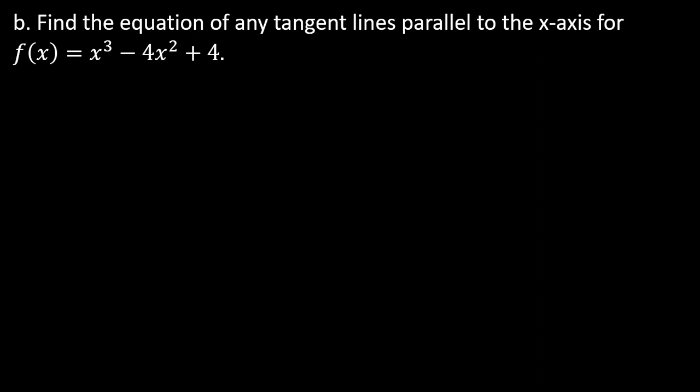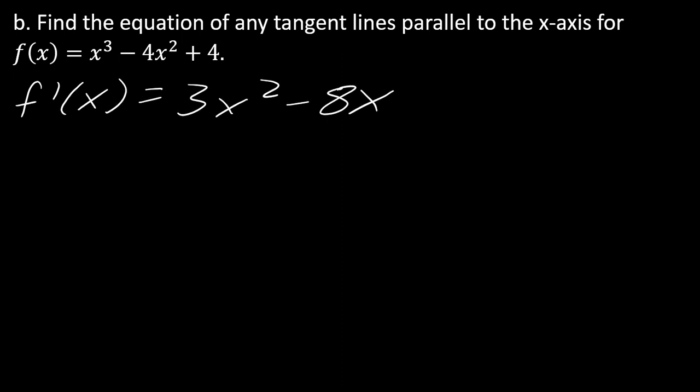On to the next one — slightly different question. Find the equation of any tangent lines parallel to the x-axis for f of x equals x cubed minus 4x squared plus 4. Once again we see the word 'tangent,' so take the derivative first. The derivative is going to be 3x squared minus 8x. I'll go ahead and factor out x, giving x times (3x minus 8), which might be helpful in a moment.